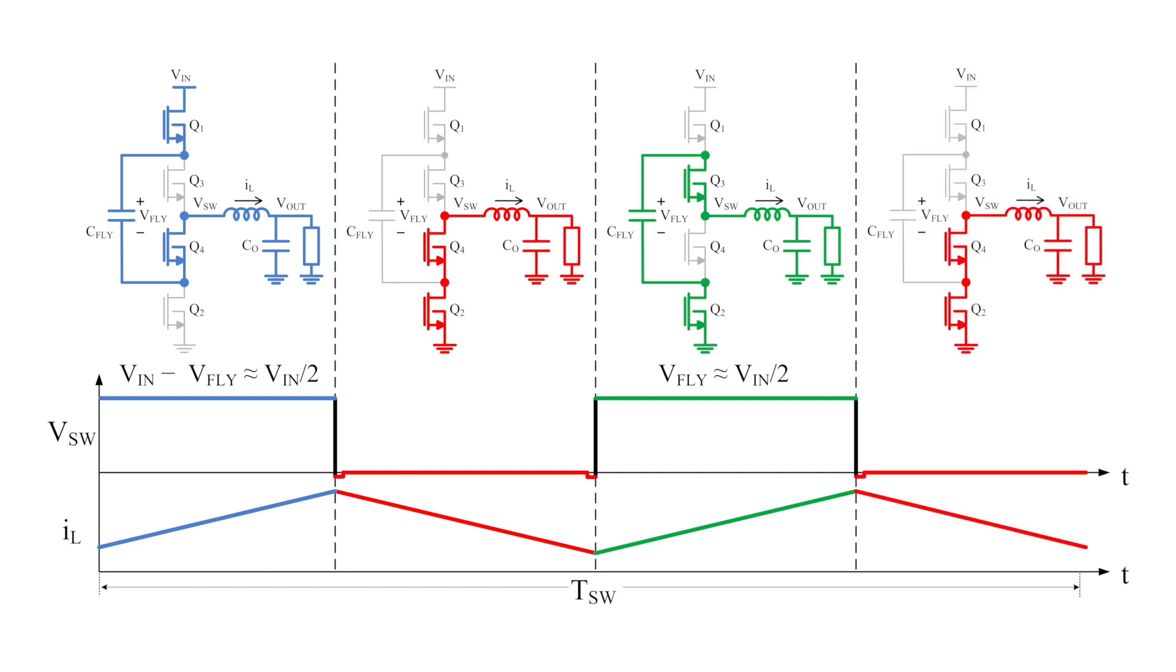Finally, the fourth stage turns off Q3 and turns Q4 back on, connecting the switch node directly to ground. This leaves the capacitor disconnected and de-energizes the inductor once again in preparation for the next cycle.